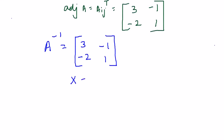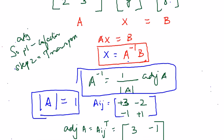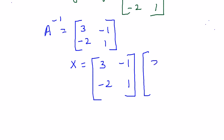Now to find X, we know that X is nothing but A inverse into B. Therefore we write X equals 3 minus 1 minus 2 1 into B. What was B matrix? 3 and 8. So we will just write it down here, 3 and 8.